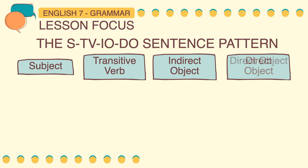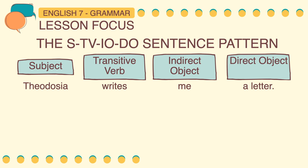Let's have example sentences to understand the STVIODO sentence pattern. Theodosia writes me a letter. To identify the subject, ask: who writes the letter? Therefore, Theodosia is the subject. To identify the transitive verb, ask: what is Theodosia doing? Theodosia is writing. So writing is a verb, but to know if it is a transitive verb, you have to look if there is a receiver of the action writing.